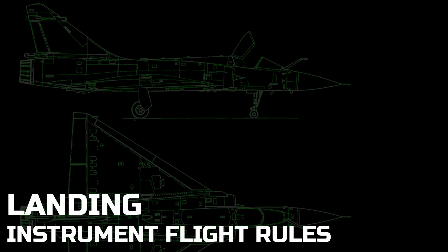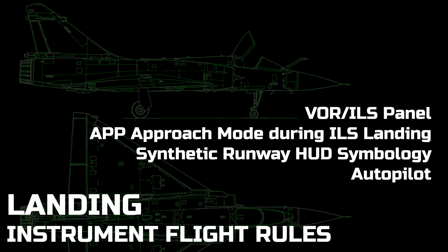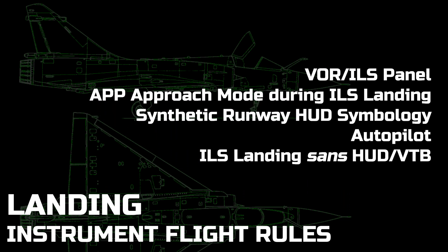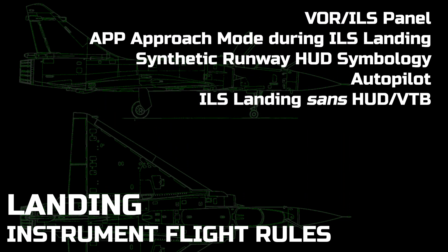In this video, we will be looking at landing procedures in the Mirage 2000C, specifically those performed in instrument flight rules conditions. We will be utilizing the Mirage's instrument landing system, discuss how the APP approach mode differs when performing an ILS landing, use of the synthetic runway symbology on the heads-up display, how the autopilot can alleviate you of a lot of the work, and some possibilities of ILS landing when in emergency conditions.